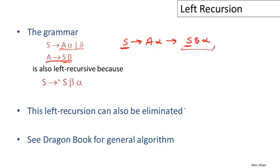This is still a left recursive grammar — we just delayed it by inserting other non-terminals at the leftmost position before getting back to S. This indirect left recursion can also be eliminated automatically without human intervention. Algorithms for doing this can be found in textbooks, particularly the dragon book.